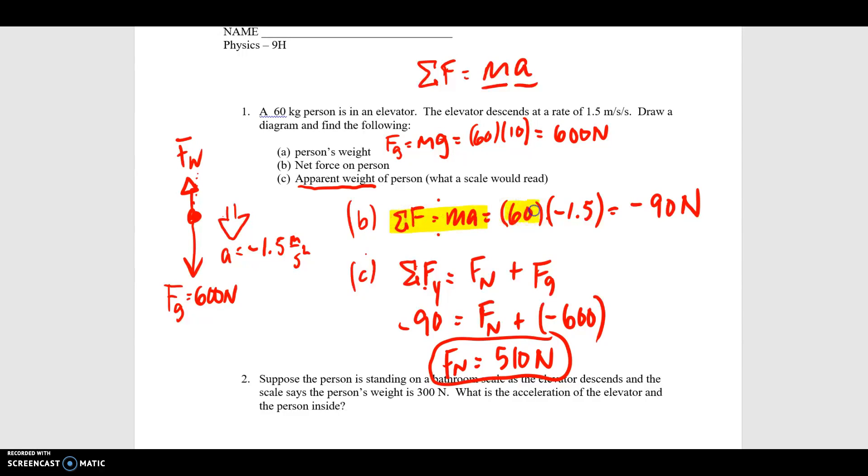We calculate it because we know the mass of the person, we know the acceleration. A simple product tells us the net force on the object. In this case, there's downward acceleration, so the net force is negative, it's downward.